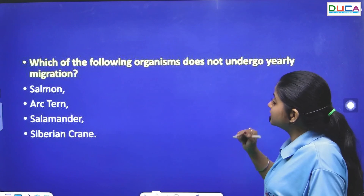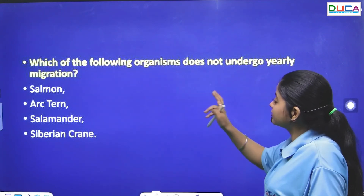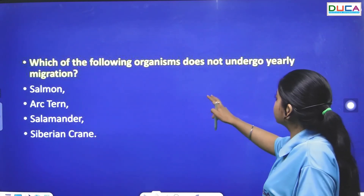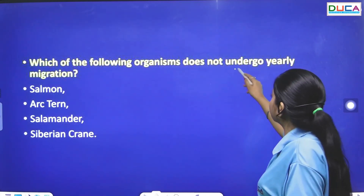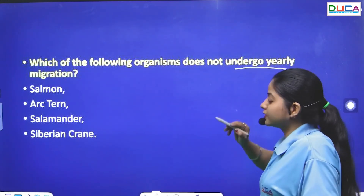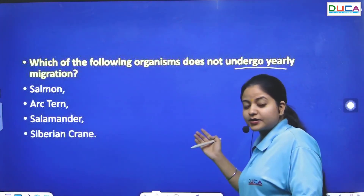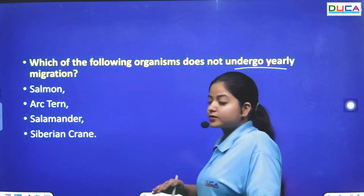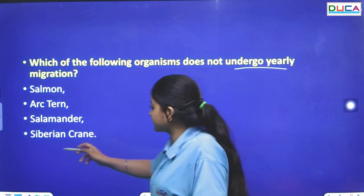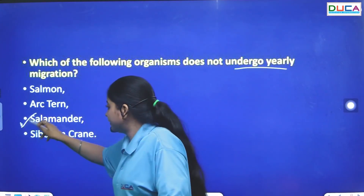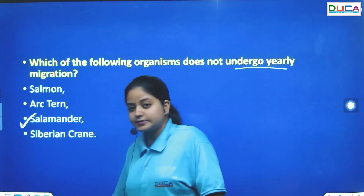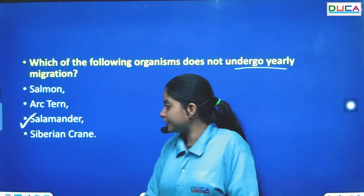Revisiting the earlier question: Which organism does not undergo yearly or annual migration? The answer is salamander — salamander does not perform annual migration.